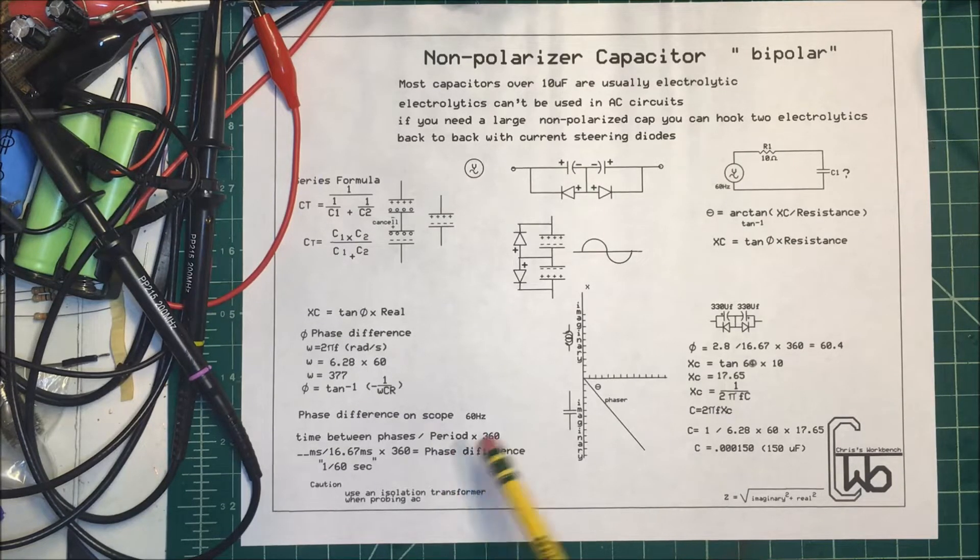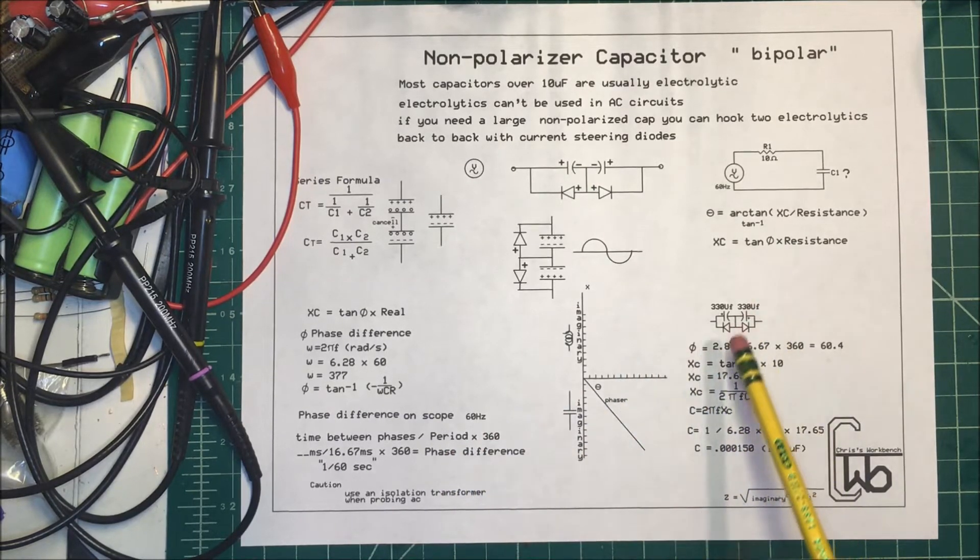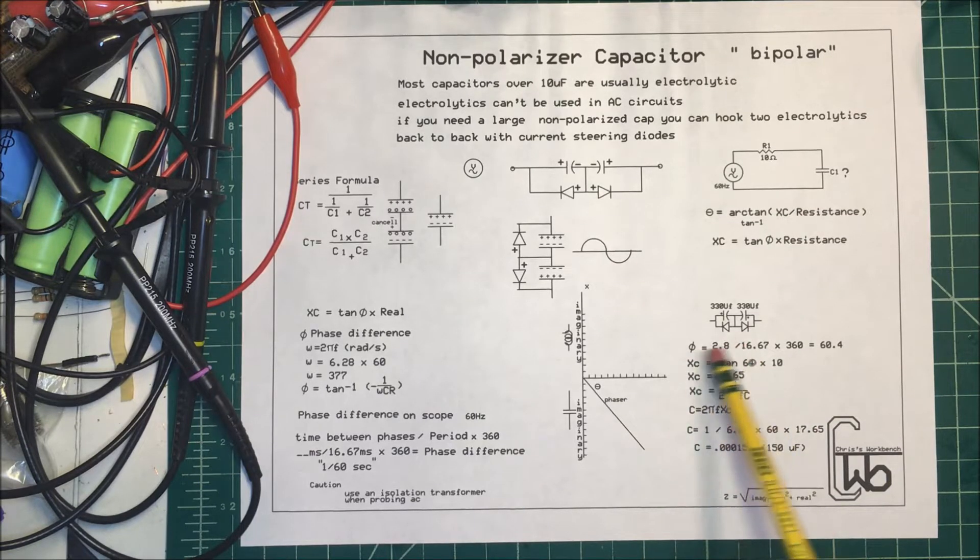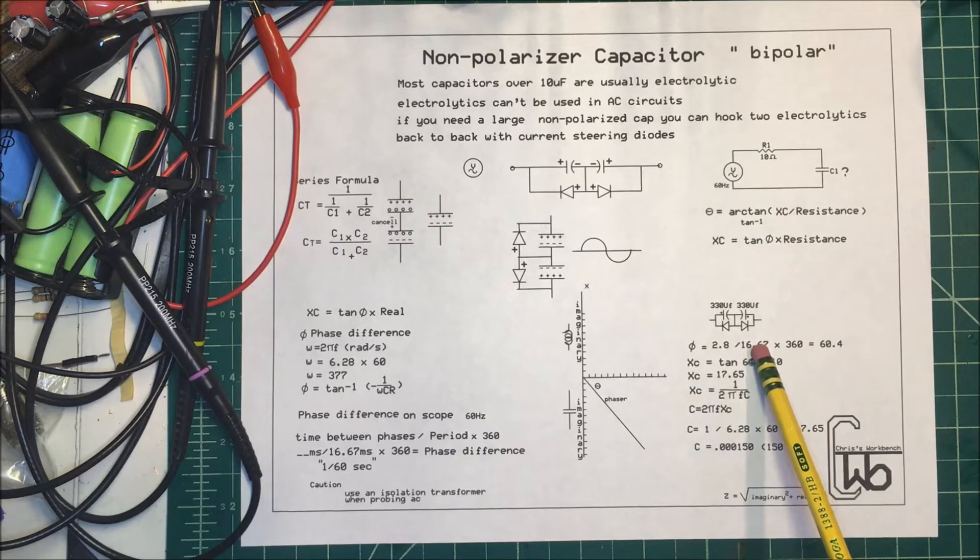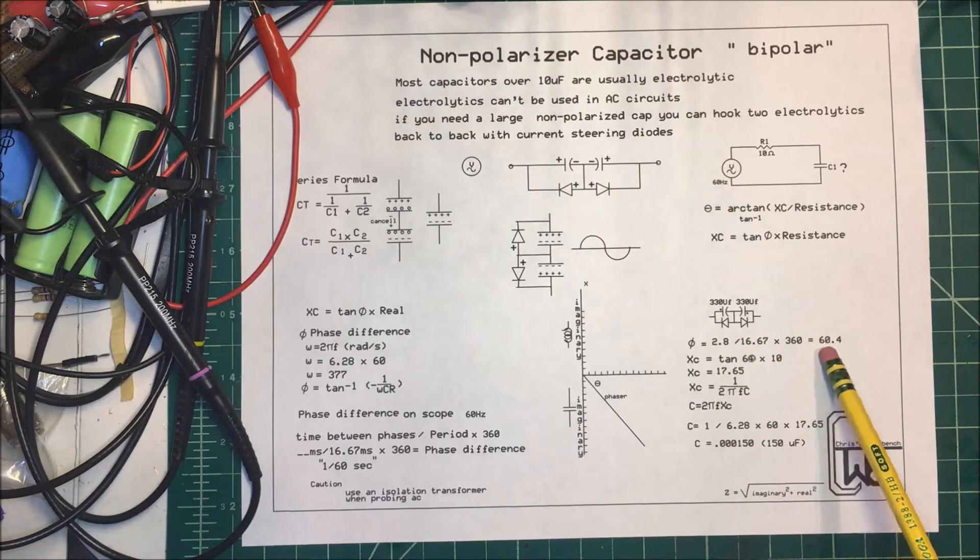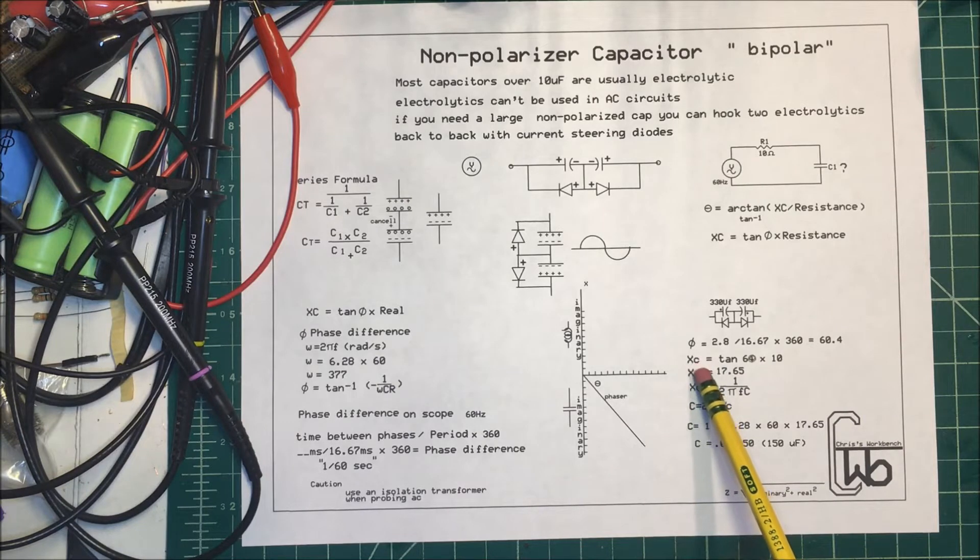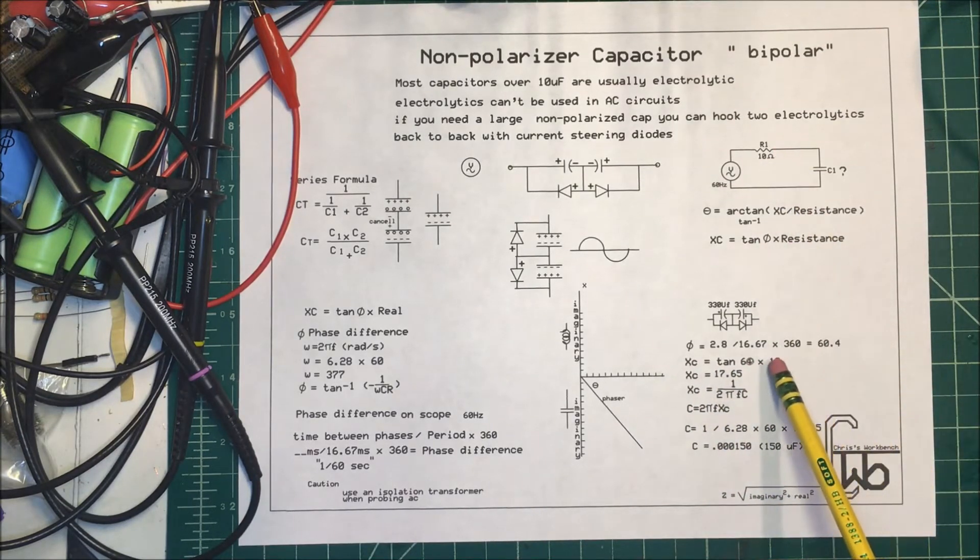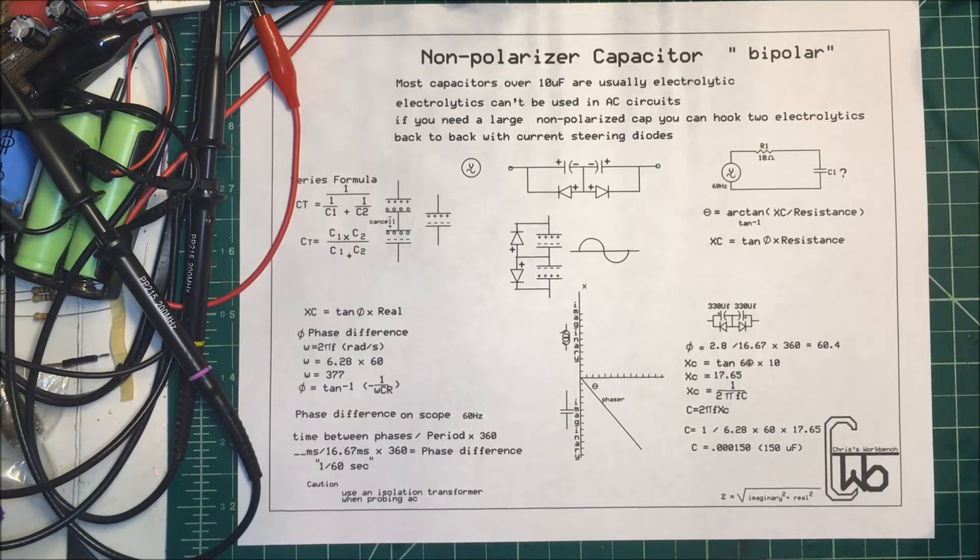Once we have that, I did it over here on the scope. I'll show you what it looks like, but it was 2.8 milliseconds between the phases, and then our period times the 360, and it came out to about 60 degrees. So to get your capacitive reactance, you can take your tangent times your 60 times the resistance here, and it came up to a capacitive reactance of 17.